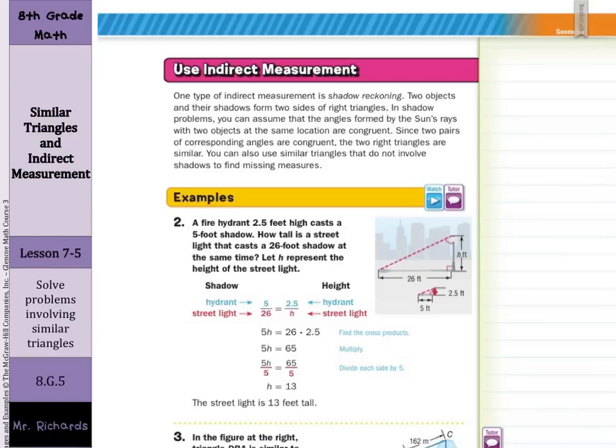In our guided example two here, a fire hydrant two and five tenths feet high, which is right here, casts a five-foot shadow. How tall is the street light, and we're going to represent that by H, that casts a 26-foot shadow at the same time? Let H represent the height of the street light.